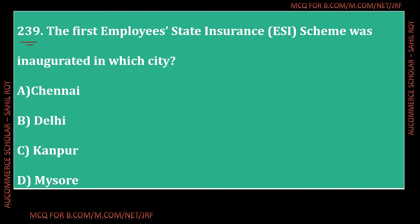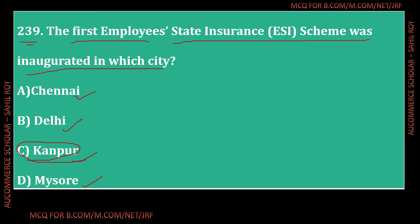Question number 239: The first Employee State Insurance Scheme was inaugurated in which city? Options: Chennai, Delhi, Kanpur, or Mysore. The correct answer is Option C - Kanpur. The first Employee State Insurance Scheme was inaugurated in Kanpur.